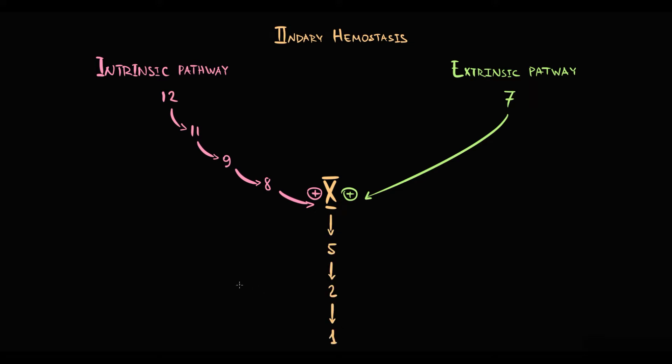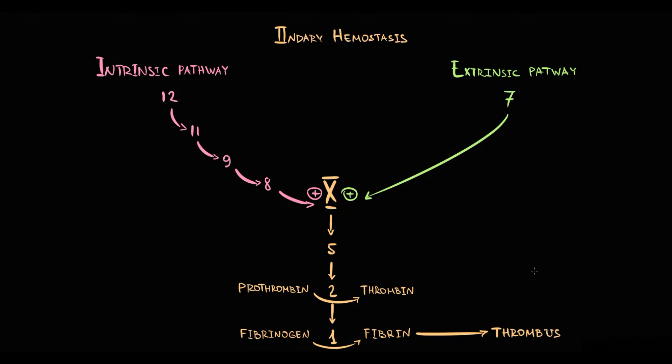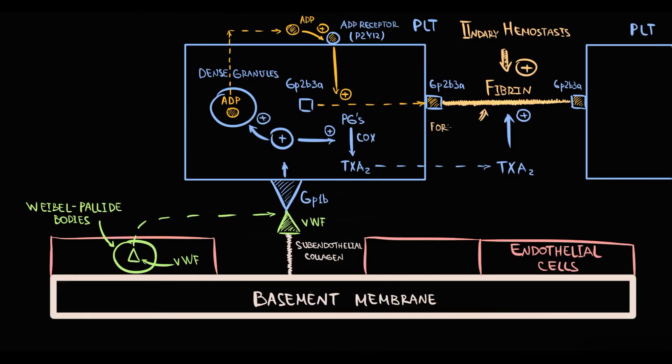Activation of factor X results in activation of factors V, II, and I. Factor II called prothrombin, that with activation becomes thrombin. And factor I called fibrinogen, that with activation becomes fibrin. And exactly fibrin makes from platelet plaque a formidable thrombus. So secondary hemostasis converts platelet plaque into a thrombus.